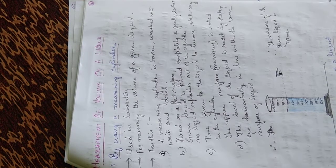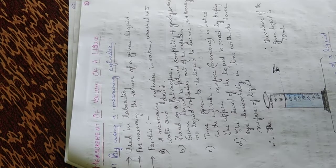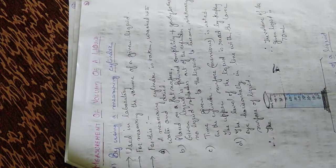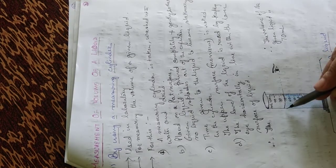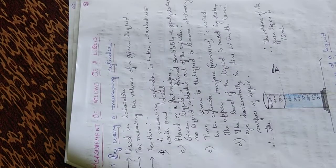Some time is given to the liquid so that it becomes stationary — no shaking — and the liquid in the cylinder settles down. Then we note the upper surface, that is the meniscus. This is called the meniscus, the layer of the upper surface. We note down that level.